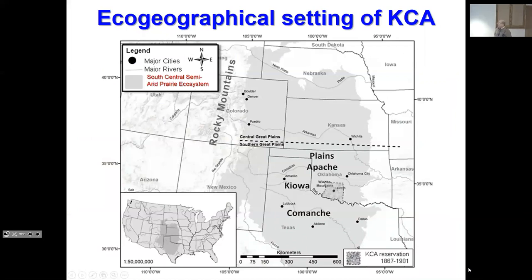Let's get back into the Southern Plains. From an eco-geographical perspective, the shaded area is the south-central semi-arid prairie ecosystem. Geographers often have a cutoff between the Central Great Plains and the Southern Great Plains — I'm mostly concerned with the Southern Great Plains. You can see where the Plains Apache, the Kiowa, and the Comanche fit in that eco-geographical scheme.